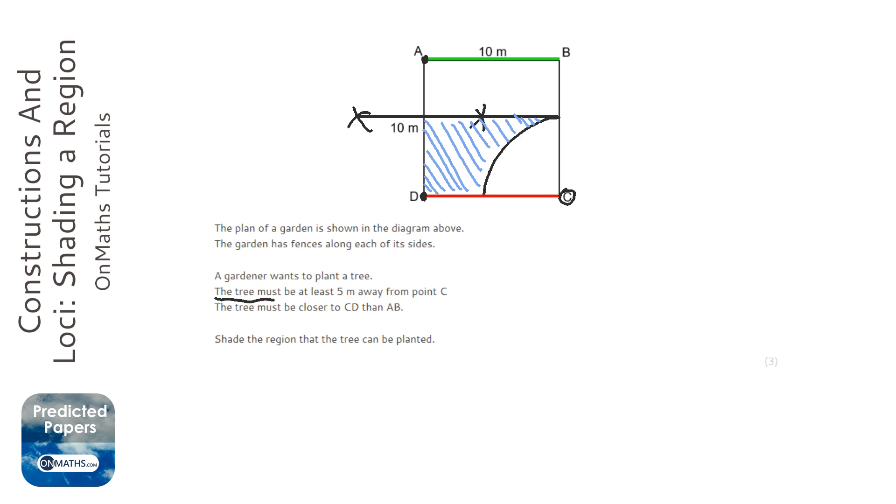It says the tree must be at least five meters away from point C, which mine is, and the tree must be closer to CD than AB, which mine is.